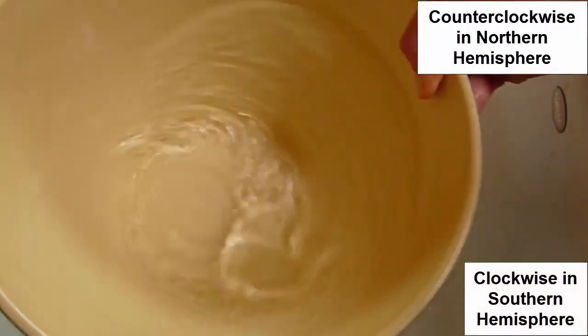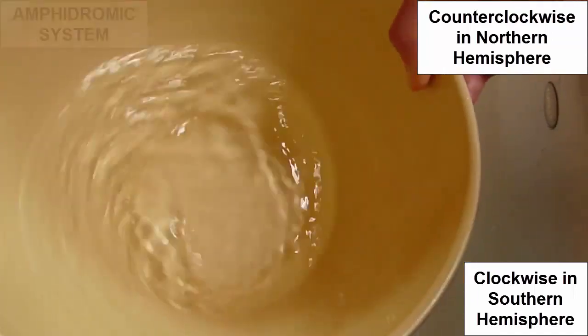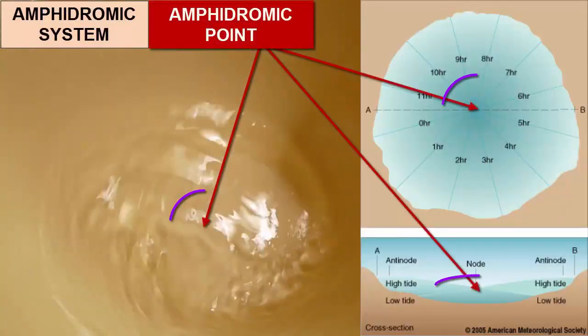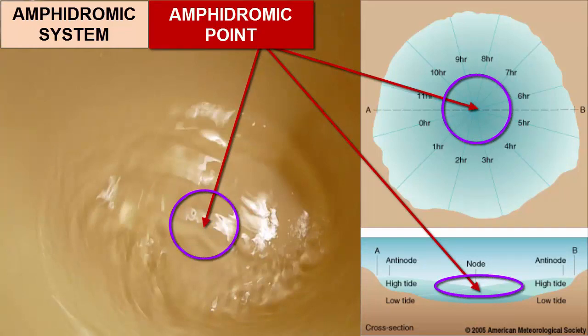We call each ocean basin, around which tides slosh, an amphidromic system. In the center of each bucket of sloshing water, there's a point where the water level doesn't change. We call that the amphidromic point. Around the amphidromic point, the tides rotate once every 12 hours and 25 minutes.